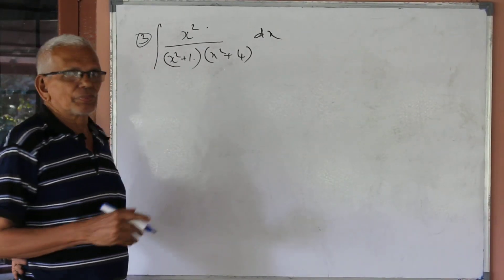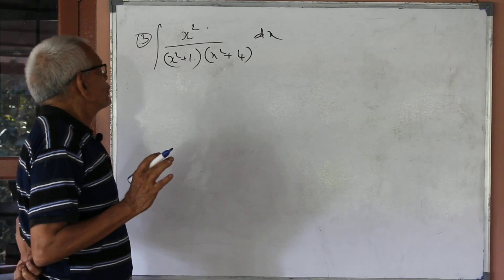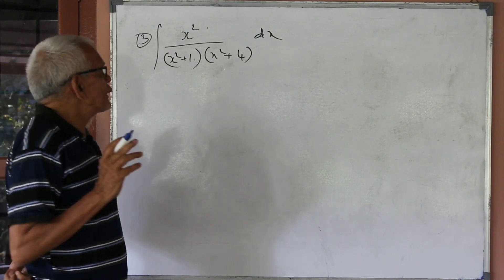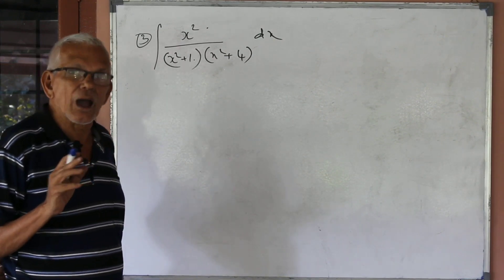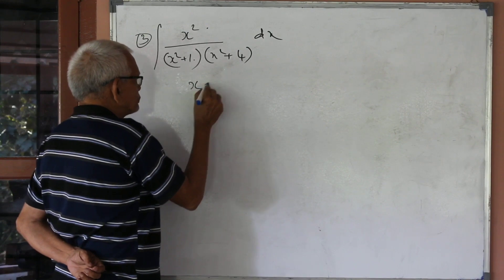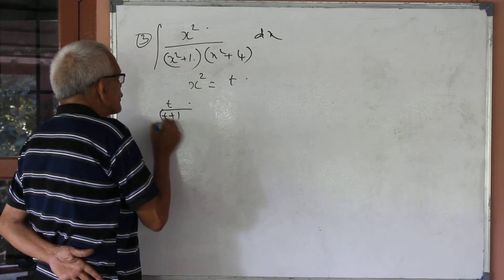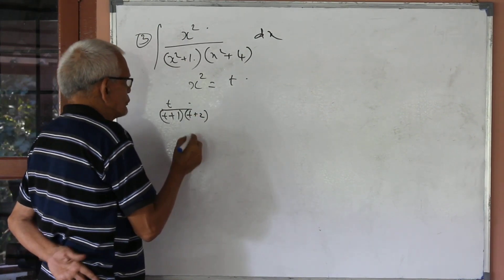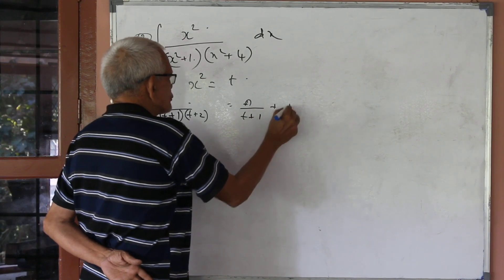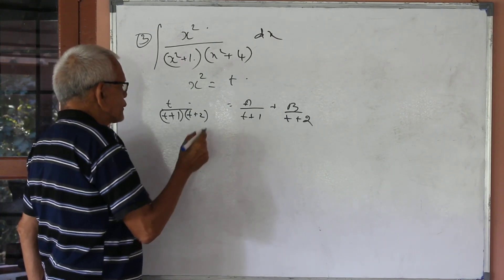Next, problem 3: x squared by (x² plus 1) into (x² plus 4) dx. Let t equal to x squared. This gives A by (t+1) plus B by (t+4). Multiply the denominator of LHS: (t+1)(t+4).